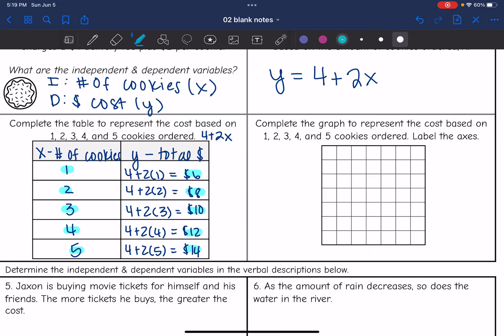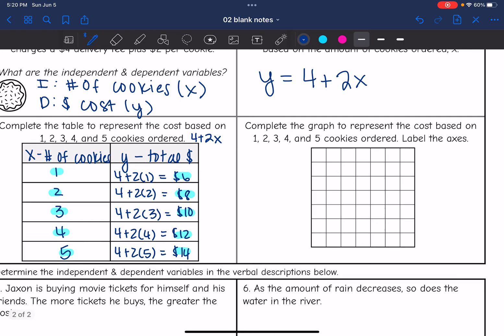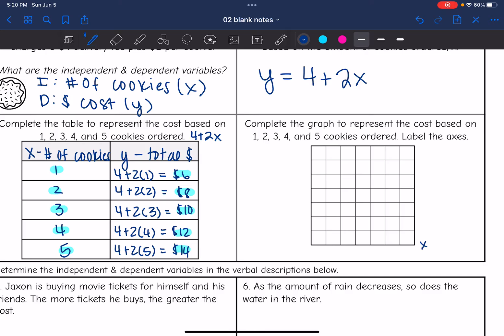Now the next part wants us to create a graph to represent the cost, which we just determined in the table for 1, 2, 3, 4, and 5 cookies. And it wants us to label the axis. So this is the X axis, and this is the Y axis. So X was the cookies. And then Y is the cost. So I can just scale this by ones, since I just have 1, 2, 3, 4, or 5 cookies that will fit there. But I think I need to count by 2s on the Y axis to fit all of that in.